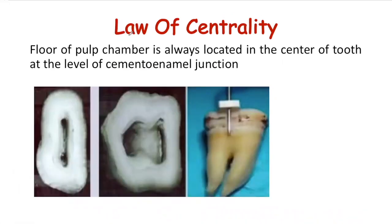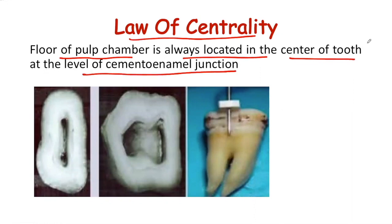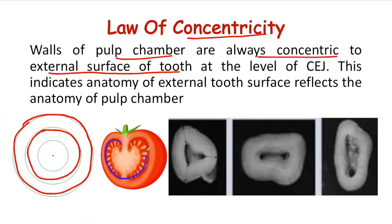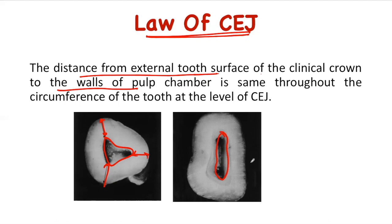To summarize these three laws: the law of centrality says the floor of the pulp chamber is always located in the center of the tooth at the level of CEJ, which helps us decide how deep we can drill without causing perforation. The law of concentricity says the pulp chamber is always concentric to the external surface of the tooth, meaning the internal anatomy of the pulp chamber reflects the anatomy of the external tooth surface. All three laws essentially convey that the internal anatomy of the pulp chamber reflects the external tooth anatomy at the level of CEJ.